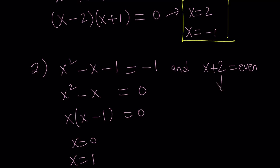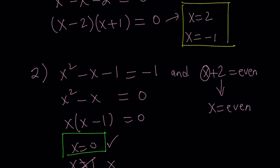Now, x plus 2 equals even means what? 2 is even, so x must be even. Now, we're going to go ahead and check our first findings with the second criteria. Is 0 even? Yes. Is 1 even? No. So we're going to discard it. We can't take an uneven number. So we're going to go with x equals 0 only. So far, it looks like we have three solutions. x equals 2, x equals negative 1, and x equals 0. Let's see if we're going to get more.